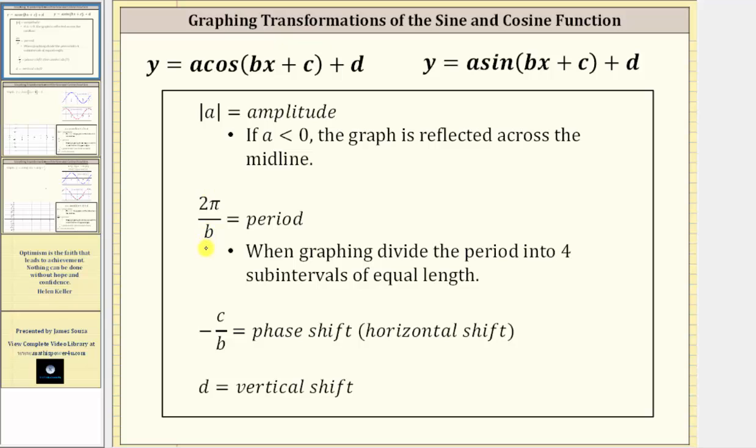Two pi divided by b is equal to the period. When graphing, we divide the period into four equal subintervals.